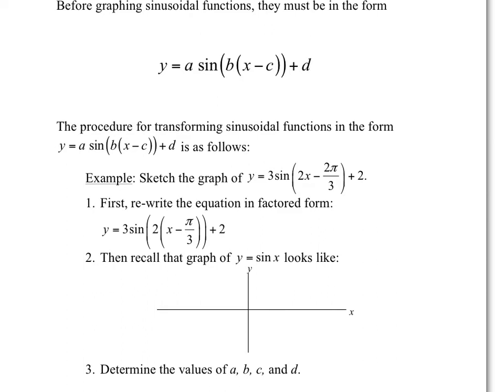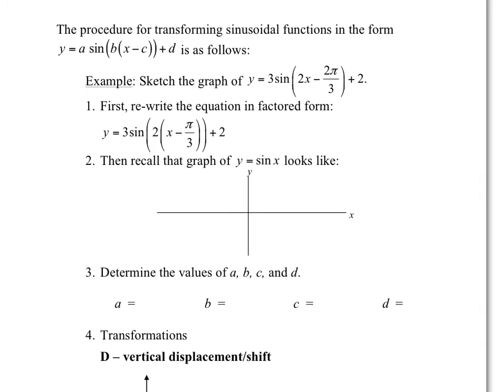Example: if you want to sketch the graph y equals 3 sine of 2x minus 2π over 3, plus 2. The same as when we did the transformation unit, you should factor any coefficient of x. It'll be a little easier to identify the value of b. So we factor out 2, and what we get is y equals 3 sine of 2 times x minus π over 3, plus 2.